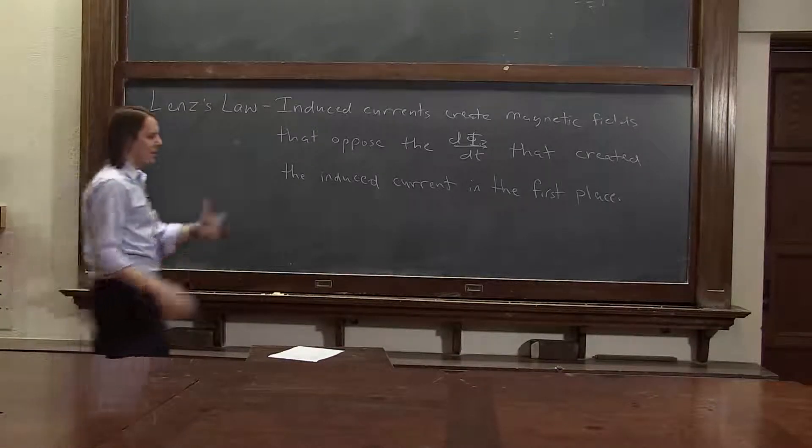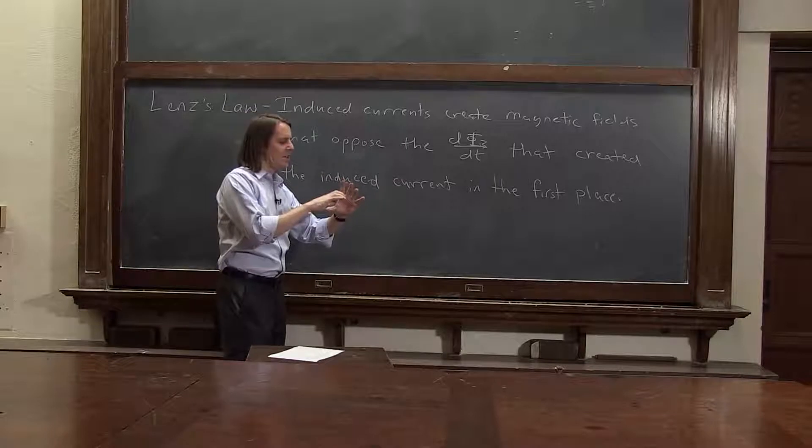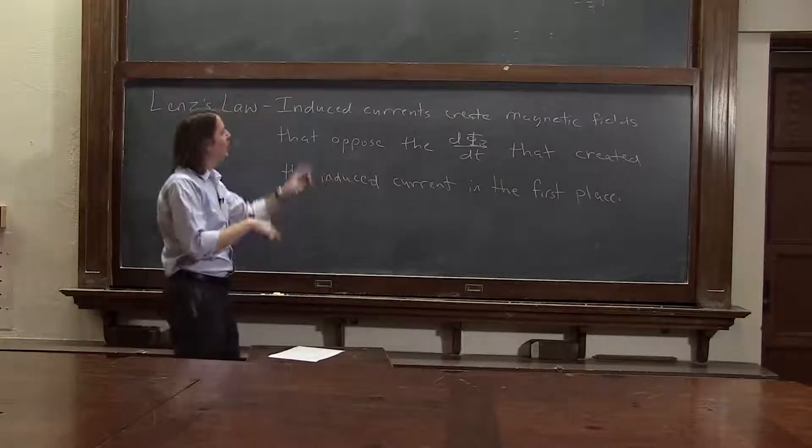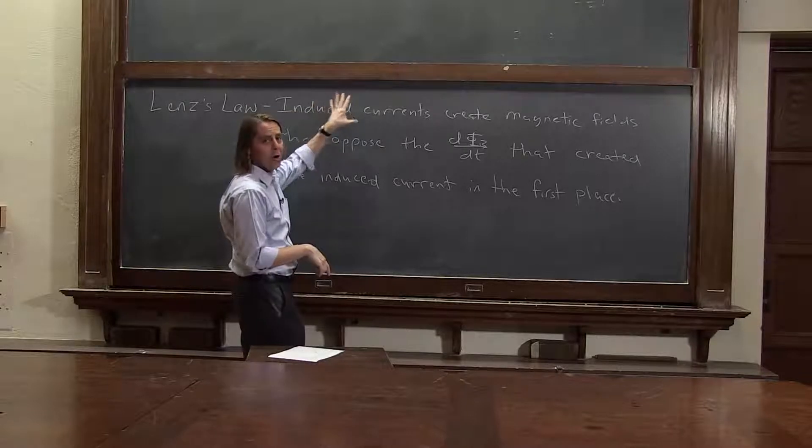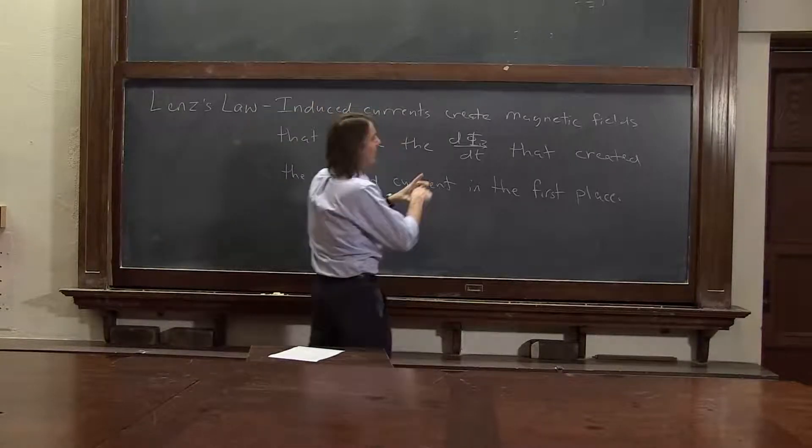Induced current. So what this means, you have a B field changing inside of, say, a metal loop, and you're going to make a current. So that's the EMF. The EMF over R is the induced current. But then, of course, that current will make its own field.